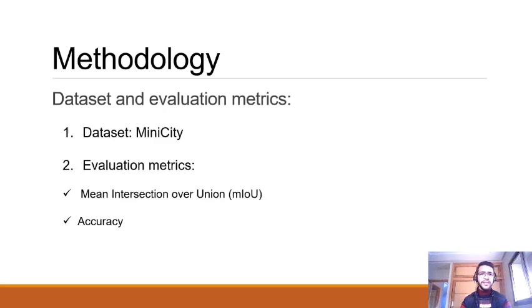We use the Mini-City dataset. It is a dataset provided in the semantic segmentation challenge competition in 2020. This dataset contains 500 images between the train, validation and test. It contains 19 classes such as building, tree, sky, road, cyclist, pedestrian, etc. All these classes are used for semantic segmentation. In addition, the Mini-City dataset can be used by machines that don't have great performance.